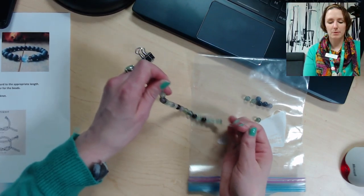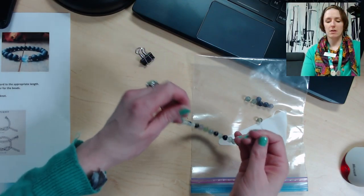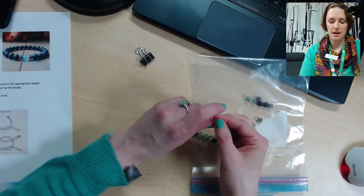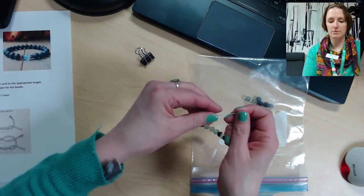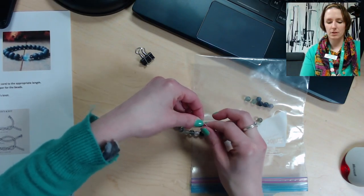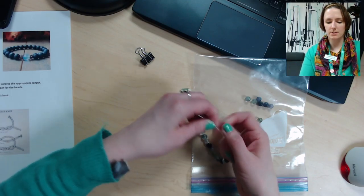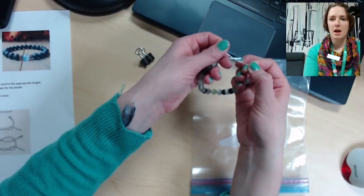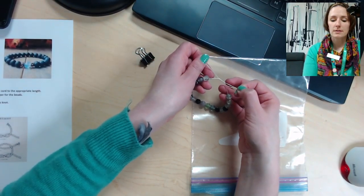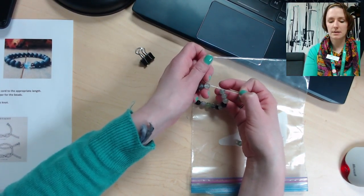And then what we're going to do is something called a surgeon's knot. So basically, you're going to twist it around twice, so it looks like that—so there are two little twists. Then you're going to pull it tight.